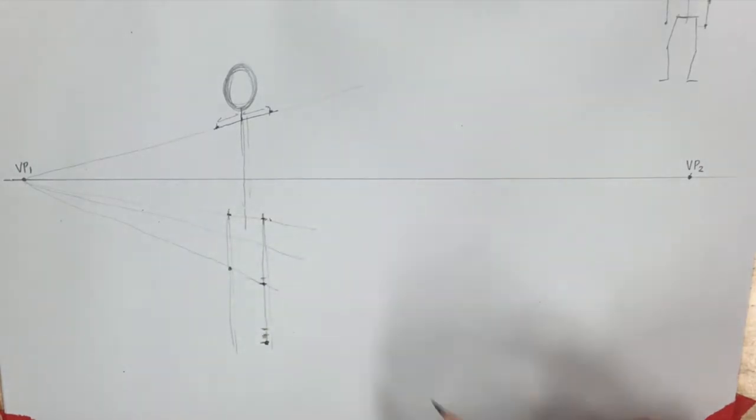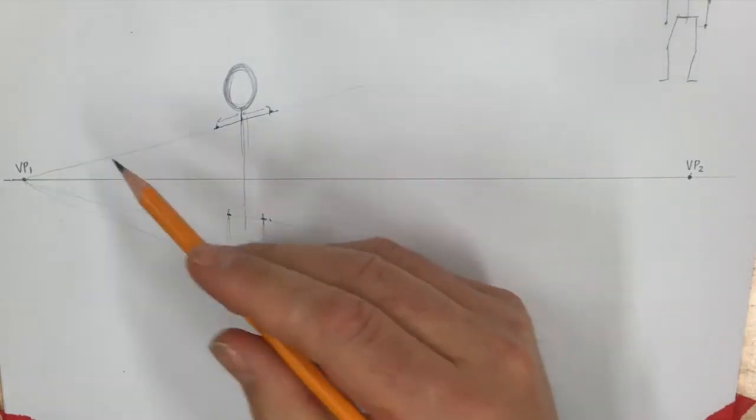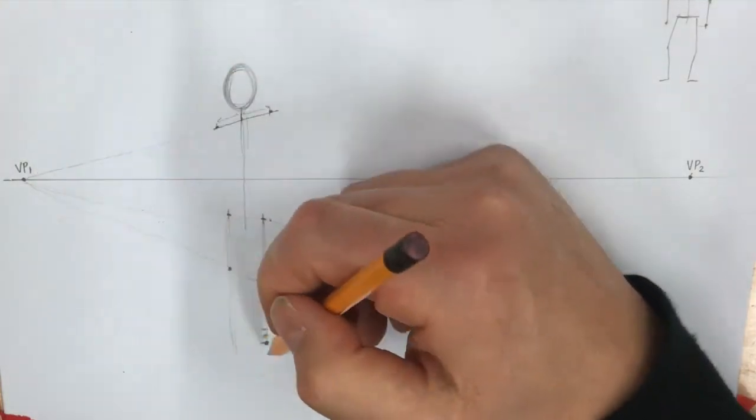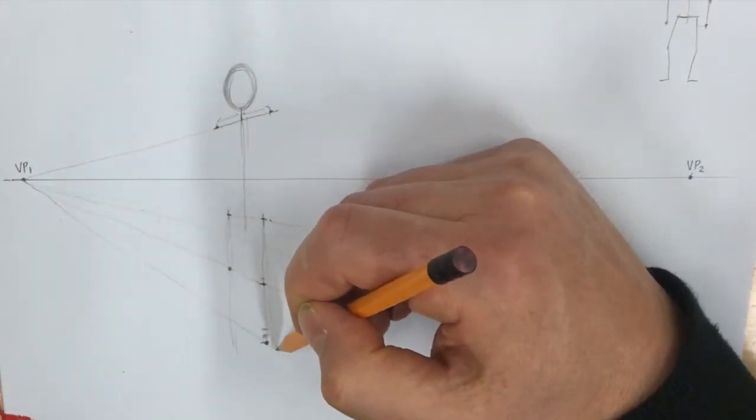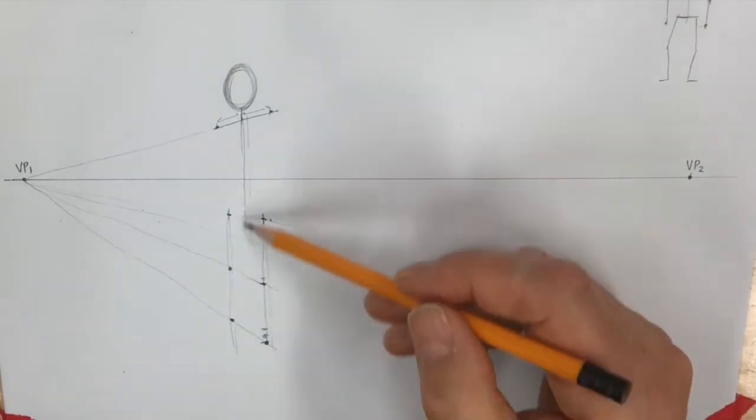And the other knee on the other leg is going to be about there because that's where the line to the vanishing point goes. Same thing here, try to draw a line as straight as possible between my vanishing point and the point that I marked as my ankle, and that's going to be the ankle on the other leg.